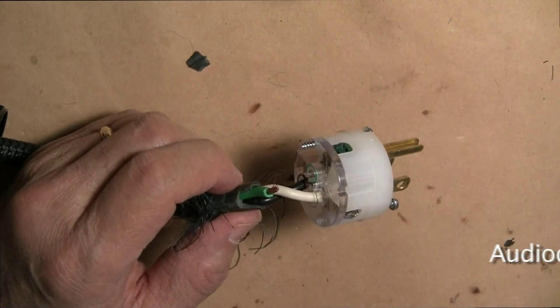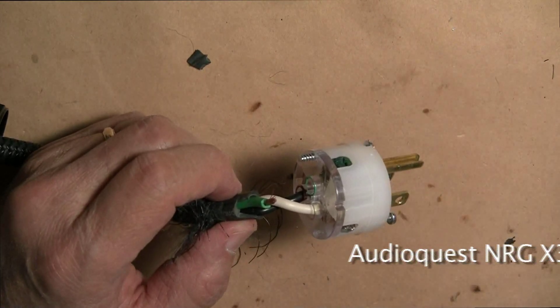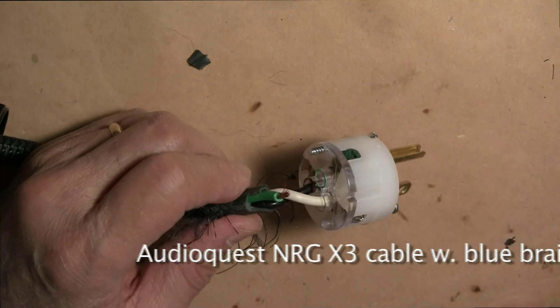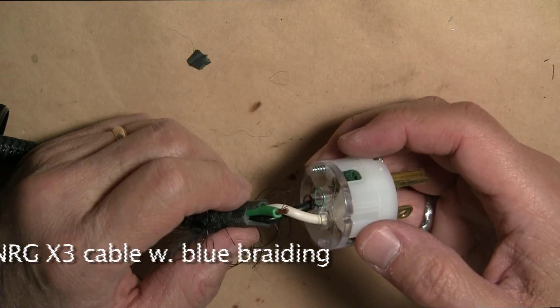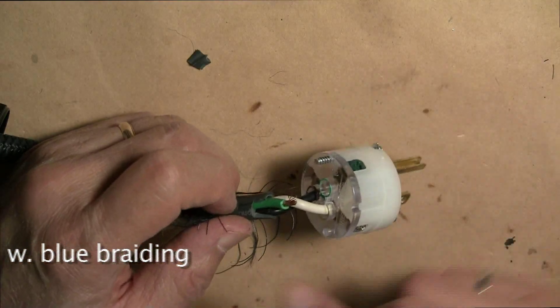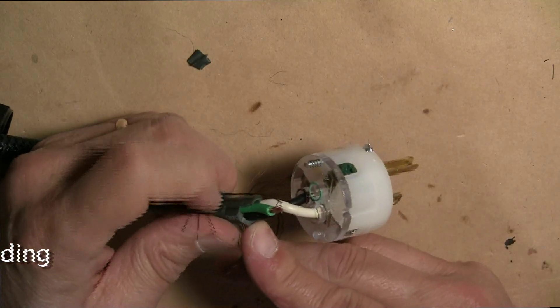For your information, this is an AudioQuest NRG-X cable and you will notice there are three wires, 16 gauge, but there is no shielding.